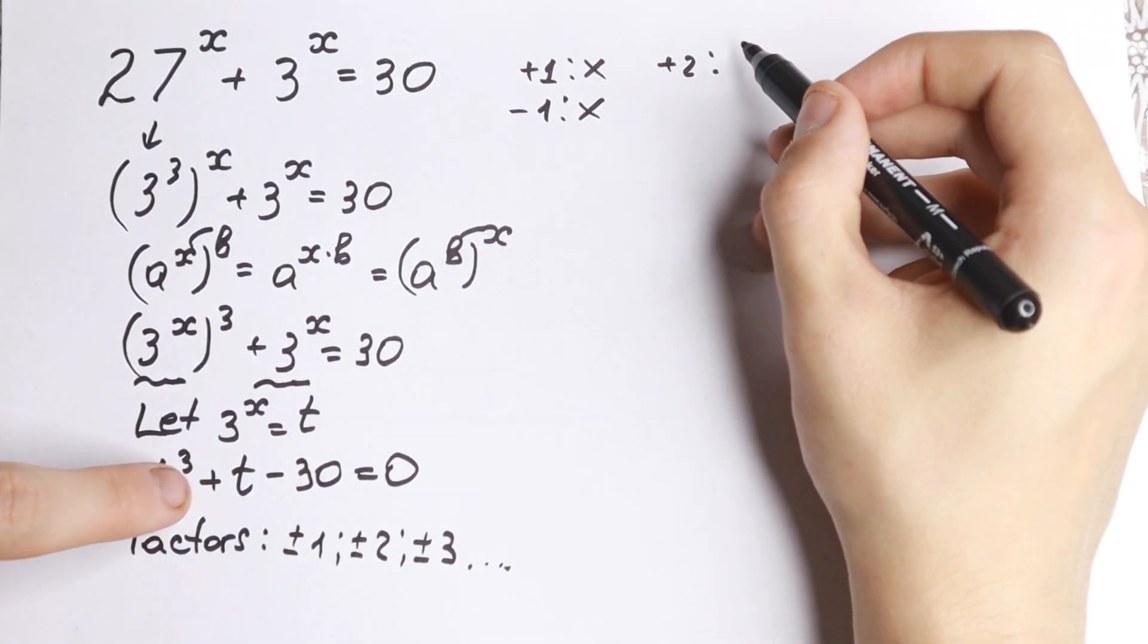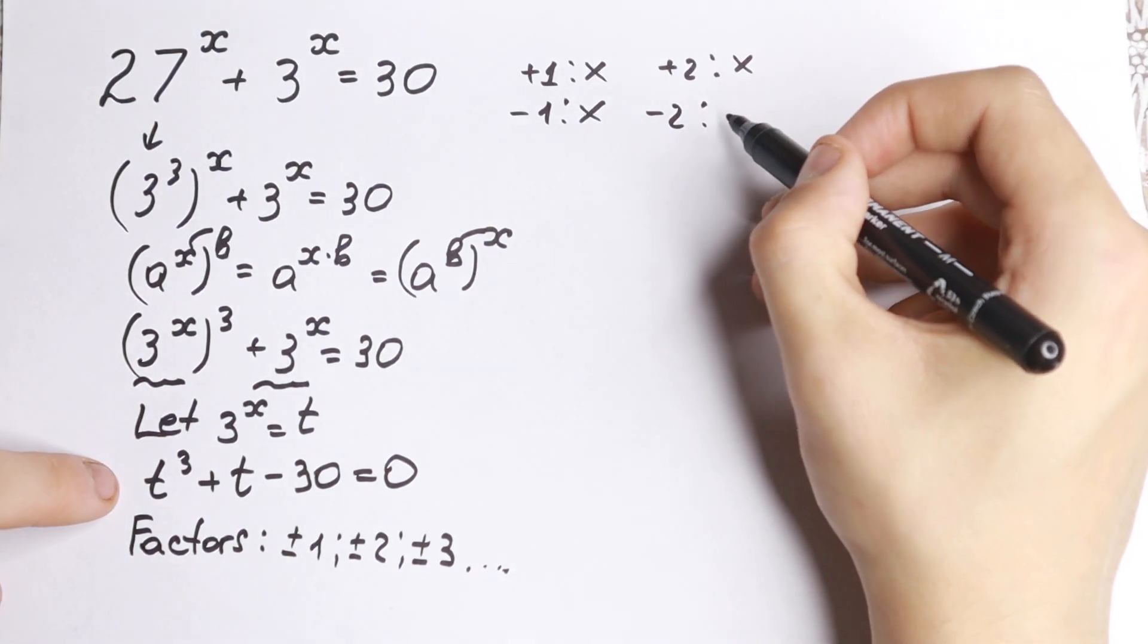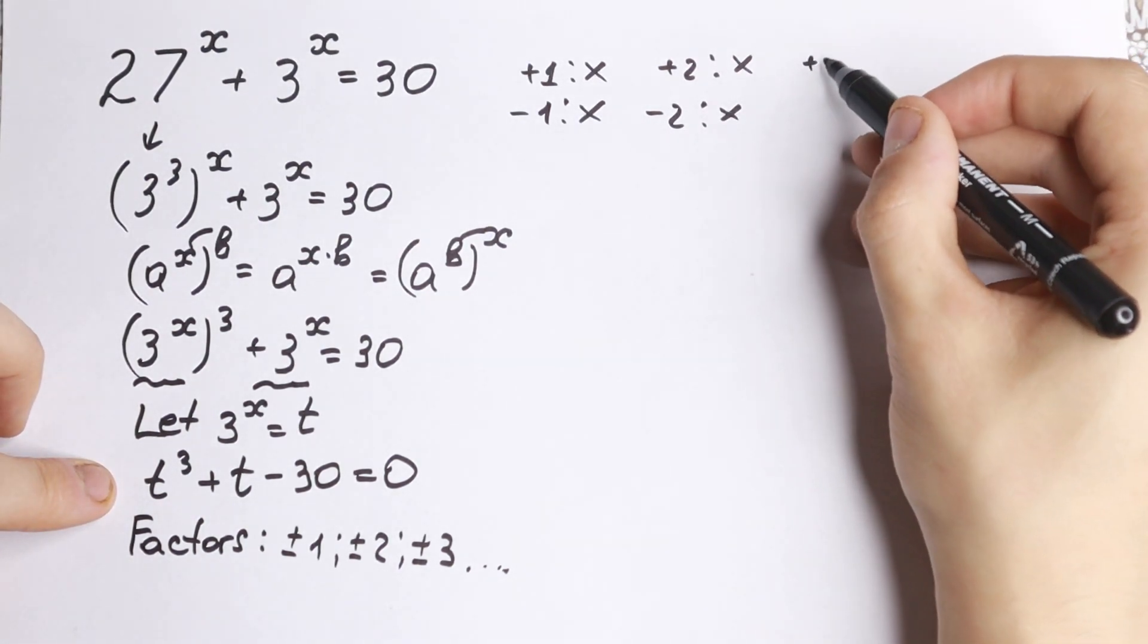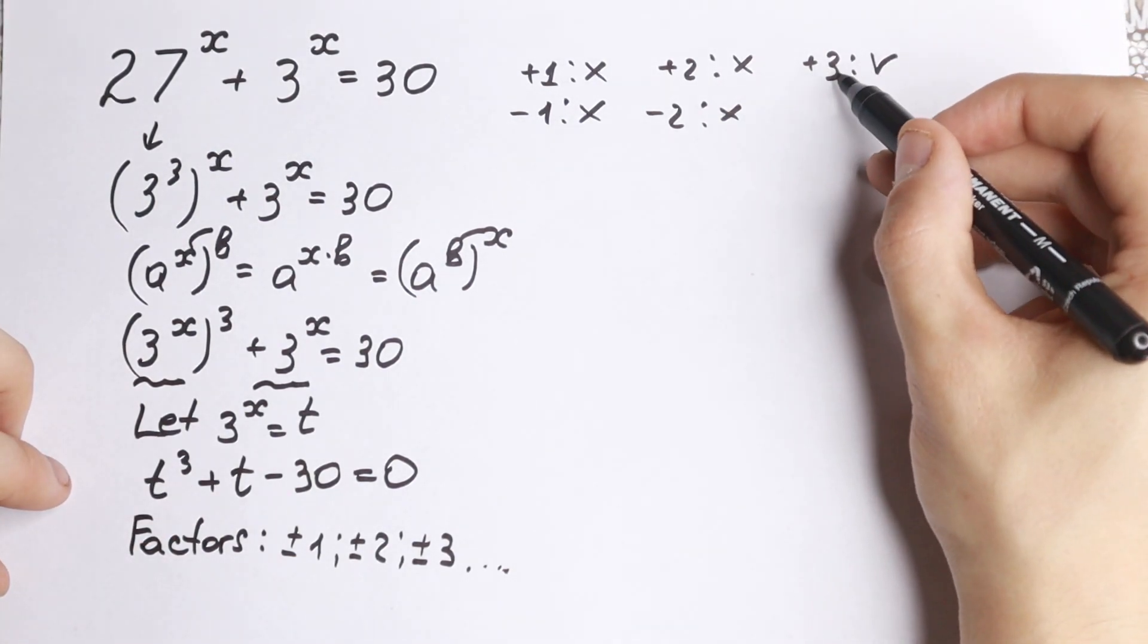The next, plus 2. We have 8 plus 2, 10 minus 30, not good. Minus 2, the same thing. The next, plus 3. What we will have? 27 plus 3 minus 30. This is good for us. So we find one factor. t minus 3 will be a factor.